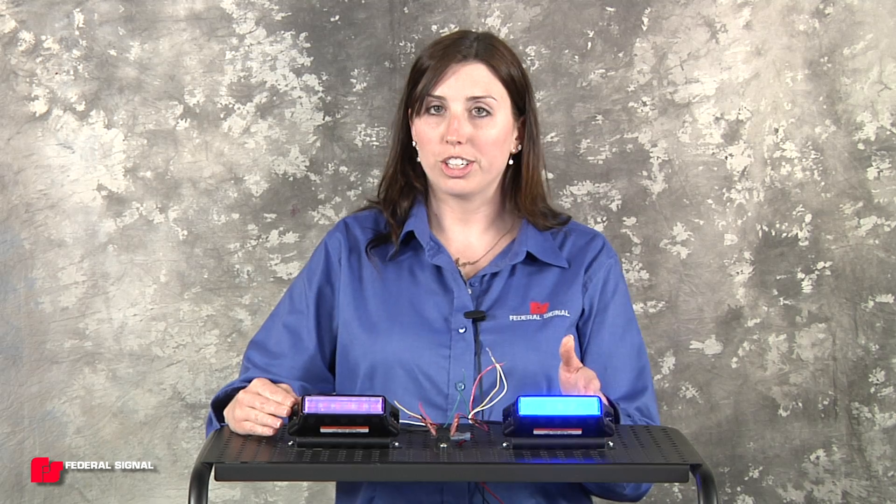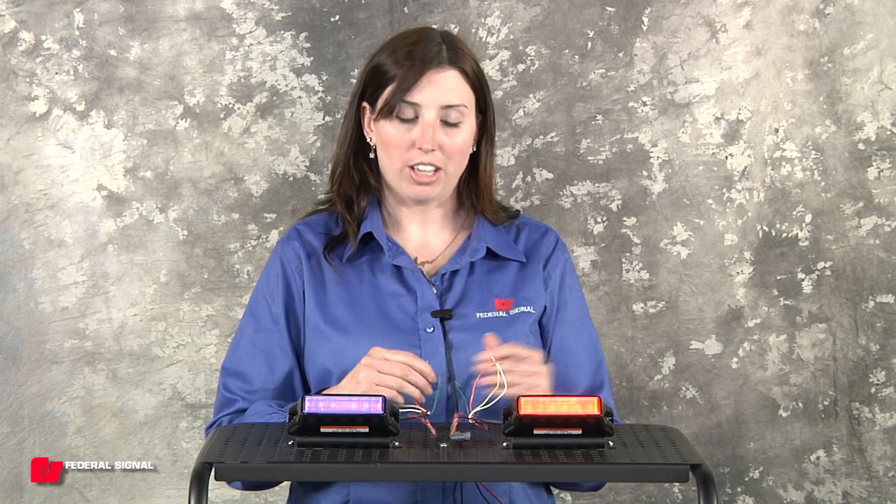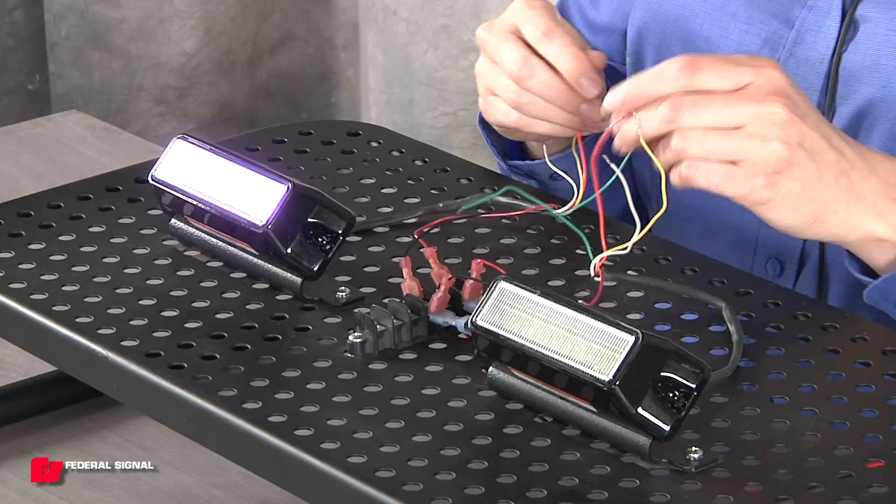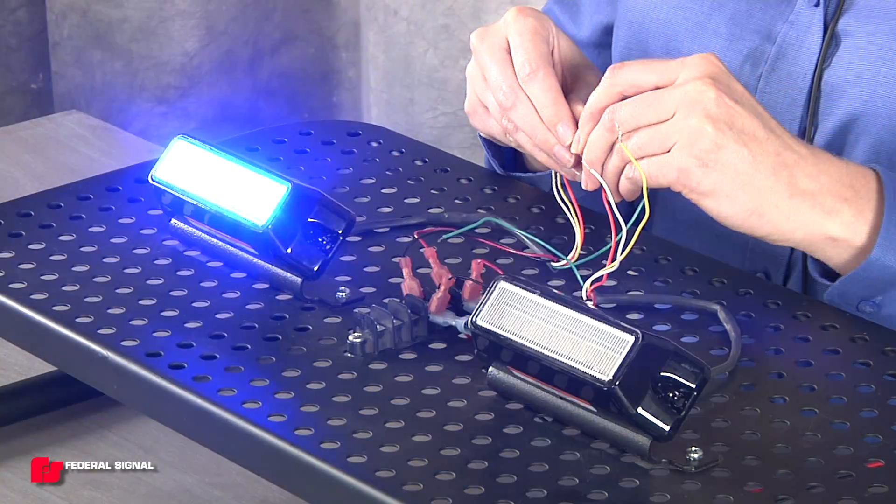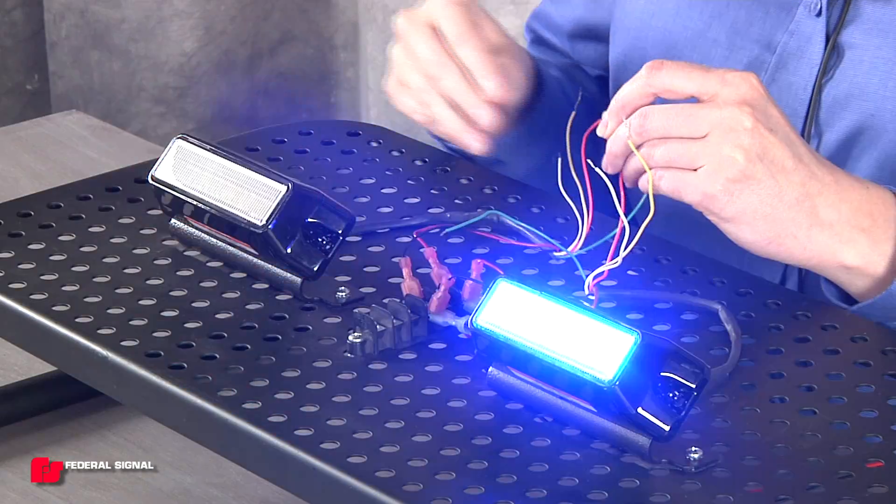Once you have your controller and follower set, if you want to alternate your lights, you would just connect the orange wires. Or if you'd like to sync your lights, you would just connect the yellow wires.